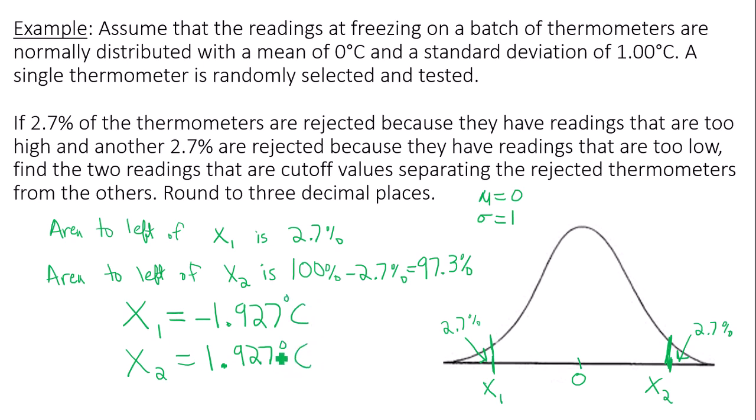The reason why you get a positive value and negative value that are the same here would be because of the fact that your tails had the same percentages on each side. Because there was 2.7% on the left side, 2.7% on the right side.